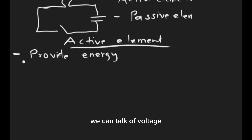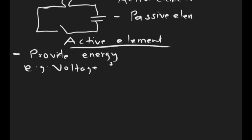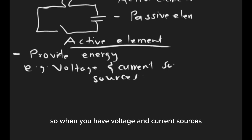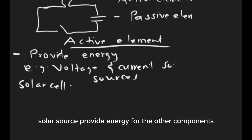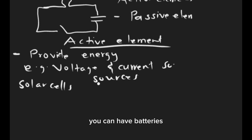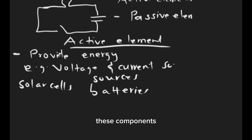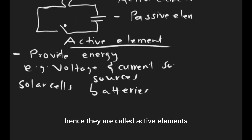Examples of active elements include voltage sources and current sources. When you have voltage and current sources, they provide energy for the other components. You can also have solar cells, which provide energy for other components, and batteries. All these components provide energy for other components, hence they are called active elements.